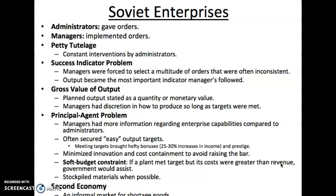Finally, a second economy emerged. When there were shortages for goods — say there wasn't enough food or clothing being produced — production would occur outside the scope of government. In other words, a black market for these goods would develop where prices and trade would exist. The more inefficient the planned economy becomes, the more likely a second economy will emerge.